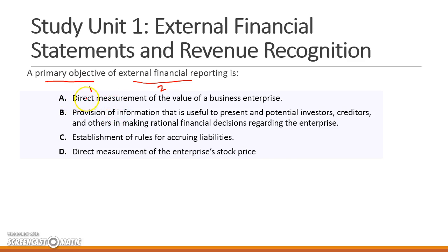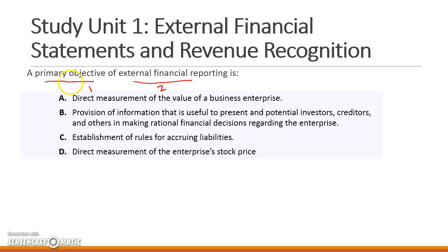These are the four options given. Option A is direct measurement of the value of a business enterprise. Option B is provision of information that is useful to present and potential investors, creditors, and others in making rational financial decisions regarding the enterprise. Option C is establishment of rules for accruing liabilities, and Option D is direct measurement of the enterprise's stock price.